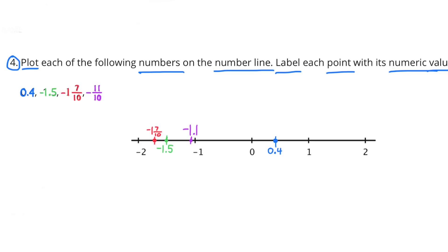Number 4. Plot each of the following numbers on the number line and label each point with its numeric value: 4 tenths, negative 1 and 5 tenths, negative 1 and 7 tenths, and negative 11 tenths. The furthest to the right is 0.4, the greatest of the four. Next is negative 1 and 1 tenth. To the left of that is negative 1.5, and then between negative 1.5 and negative 2 is negative 1.7.